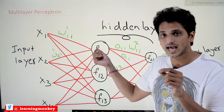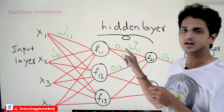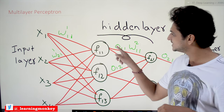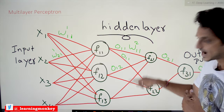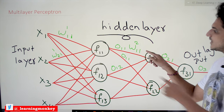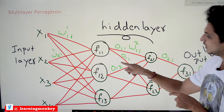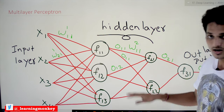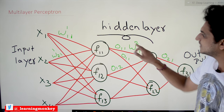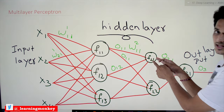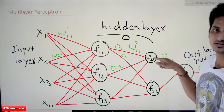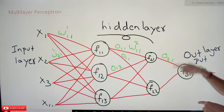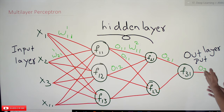If a neuron gets activated, we get an output — called O11 for the first neuron in the first layer, O12 for the second neuron in the first layer, and so on. These outputs are then provided as input to the next layer, where we add weights again — for example, W going to the second layer from the first neuron is denoted accordingly, and from the second neuron to the first neuron in the next layer similarly. All outputs are multiplied by their respective weights, the summation is computed, and fed into the activation function of the next layer. If the neuron in that layer activates, its output feeds into the output layer. The final output of the network is denoted O3.